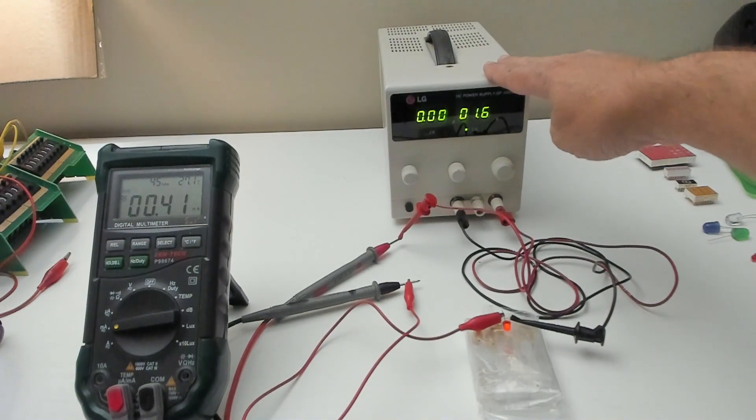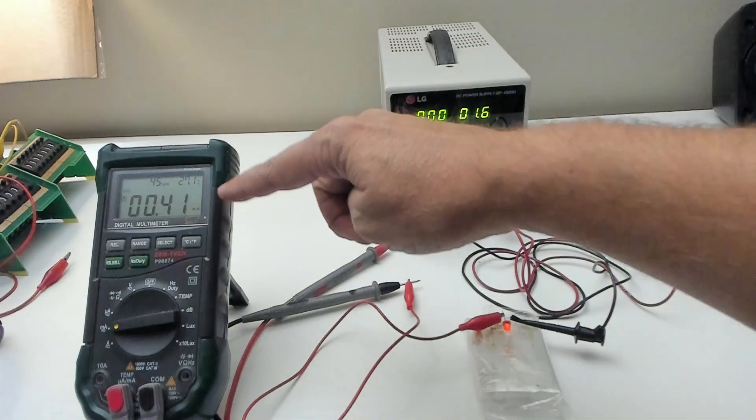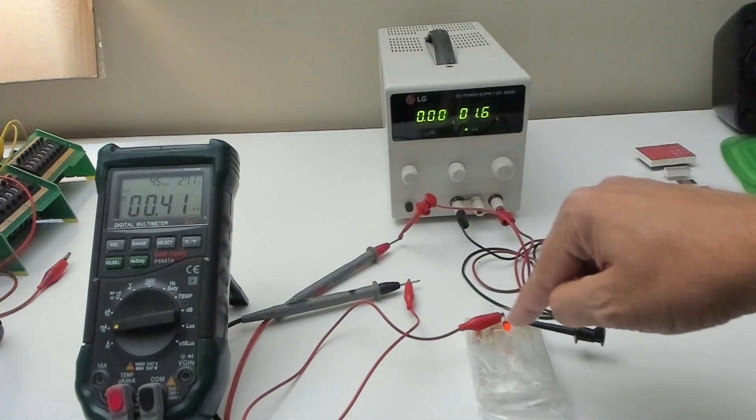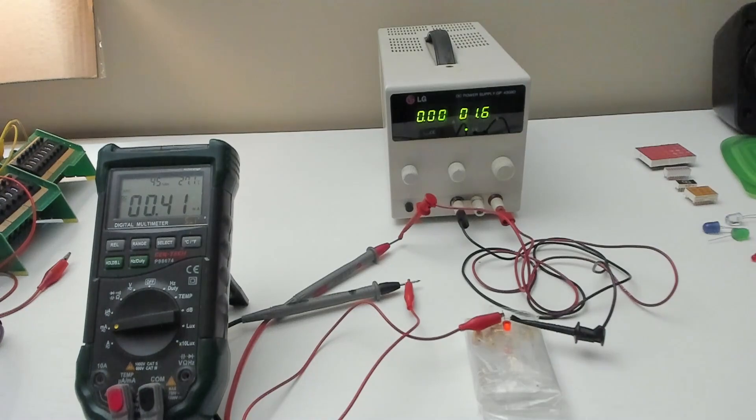In this circuit, we have our voltage supply going into our amp meter and then going into the LED. Notice there's no resistor in the circuit, which is a bad idea.